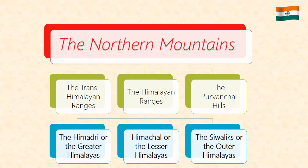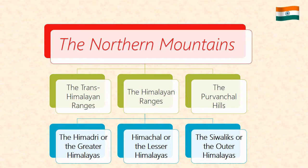Again, in the northern mountains we have three classifications: the Trans-Himalayan range, the Himalayan ranges and the Purvanchal hills. The Himalayan ranges are again classified into three sections — the Himadri or Greater Himalayas, Himachal or Lesser Himalayas, and the Shivalik or the Outer Himalayas.